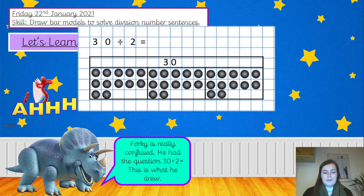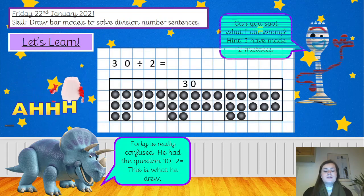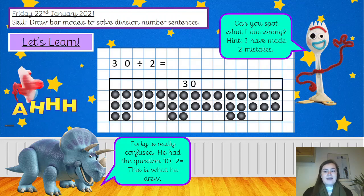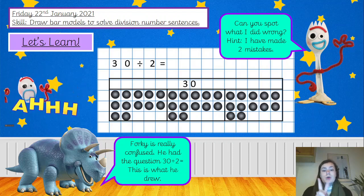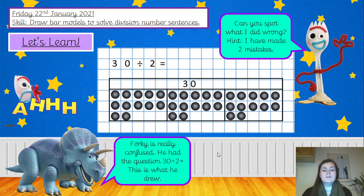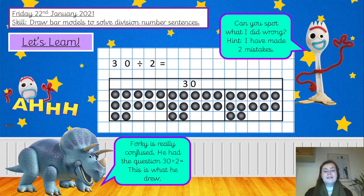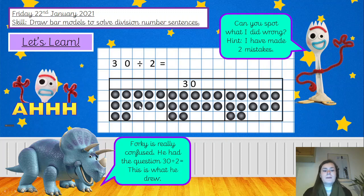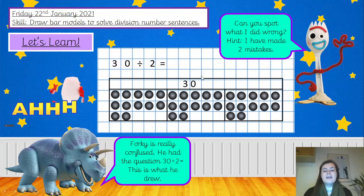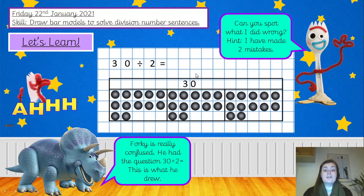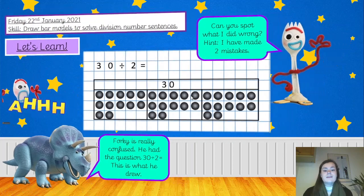Forky has got really confused. He had the question 30 divided by 2 equals, and this is what he's drawn. Can you please have a look and see if you can spot what Forky has done wrong? He's given you a hint — he says he has made two mistakes. So pause the video and see if you can spot those two mistakes. Hopefully you spotted that the question says divided by two but he's divided by three — he's split the bottom bar into three different groups instead of two. And the other thing Forky has done wrong is he's used way too many counters — he's actually used 36 counters when he should only have used 30. Well done if you spotted both of those.